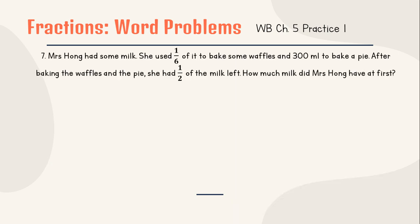Number 7: Mrs. Hong had some milk. She used 1/6 of it to bake some waffles and 300 milliliters to bake a pie. After baking the waffles and the pie, she had half of the milk left. How much milk did Mrs. Hong have at first? As you can see, Mrs. Hong had this milk at first, one whole. After that, she used 1/6, so divide it into 6 boxes.